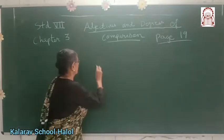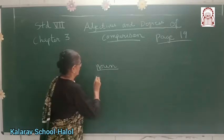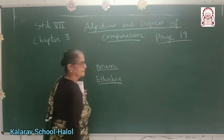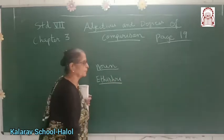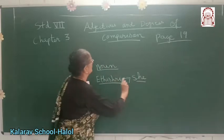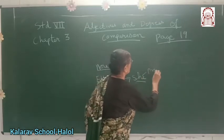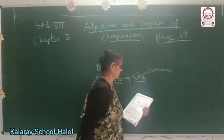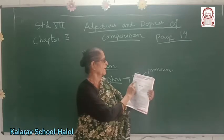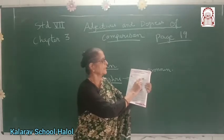For example, take a noun — Itishri. This is a noun. What will be the pronoun? Instead of her, you put she. This is an adjective. It tells you more about Itishri — she is a pronoun. It tells you more about the noun. An adjective is a word used to describe a noun or a pronoun.